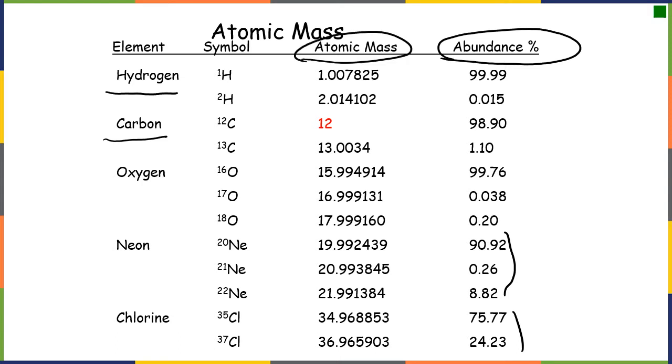The atomic mass is going to be a unit of AMUs. And this is an AMU here is one twelfth of the mass of a carbon-12 atom. And it's about equal to the mass of one proton or one neutron.